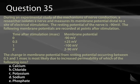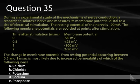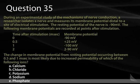Question 35. During an experimental study of nerve conduction, a researcher isolates a nerve and measures its membrane potential distal to a site of electrical stimulation. The resting potential is negative 90 millivolts. Membrane potentials are recorded at points after stimulation, with data shown below. The change in membrane potential occurring between 0.5 and 1 milliseconds is likely due to increased permeability of which ion? A, calcium. B, chloride. C, potassium. D, sodium. Or E, phosphate.